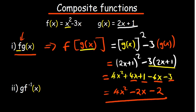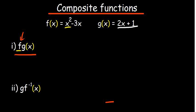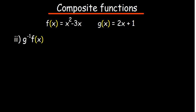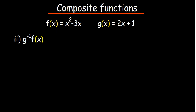So the simplified form of the composite function is 4x squared minus 2x minus 2. That's number one done. Feel free to pause the video and try the second part. For the second part of the question, the first function listed is g inverse, which means we need to find the inverse of g(x) first.